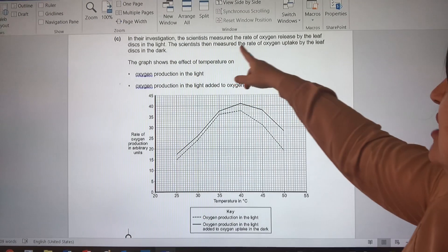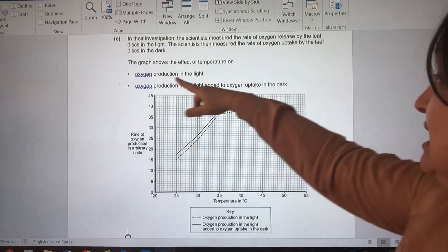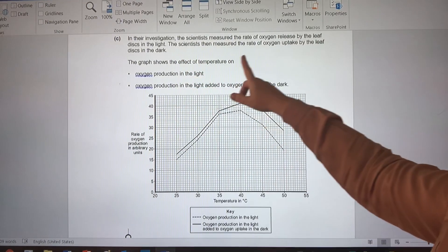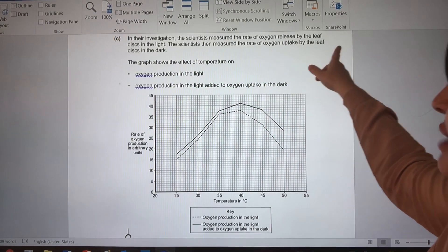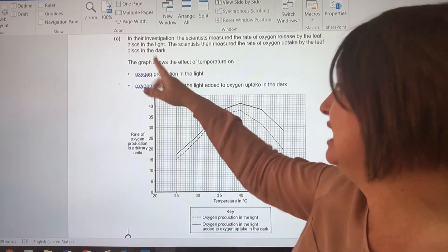It says, in an investigation, scientists measured the rate of oxygen released by the leaf discs in light. The scientist then measured the rate of oxygen uptake by the leaf discs in the dark.